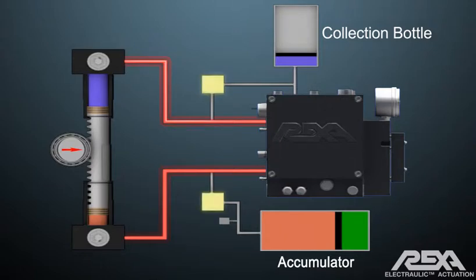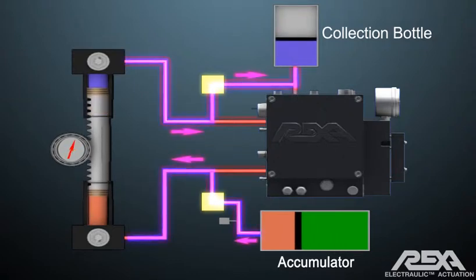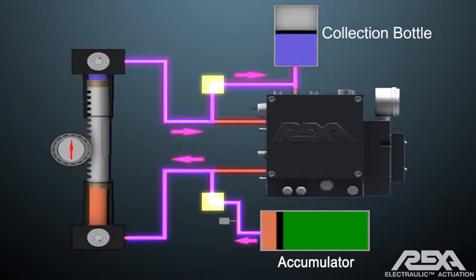On a trip condition, the solenoid valves will open. The nitrogen-charged accumulator will push oil into the connected hydraulic cylinder, while the collection bottle will provide a volume for the other side of the hydraulic cylinder to empty into. The connected valve or device will be positioned to the design trip position.